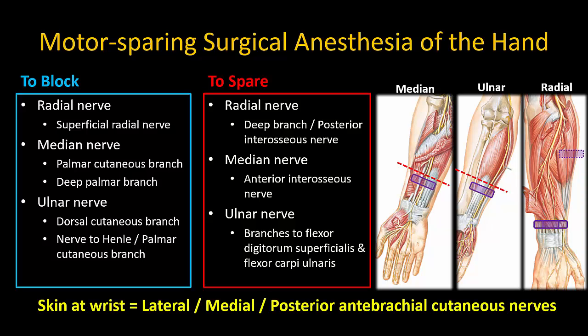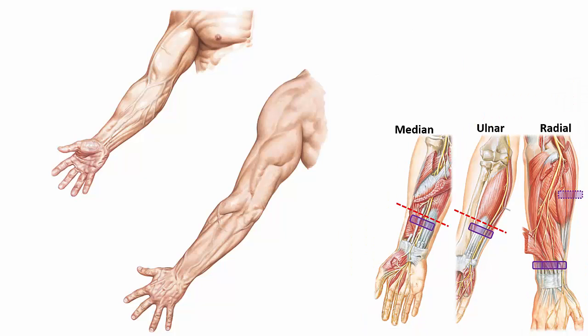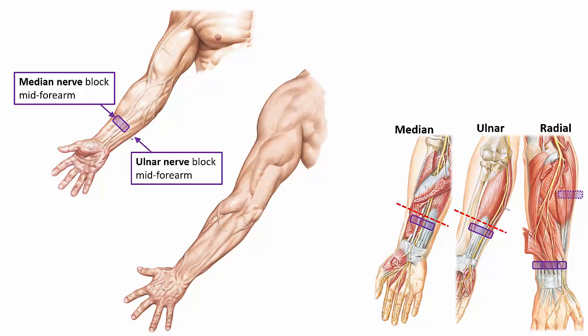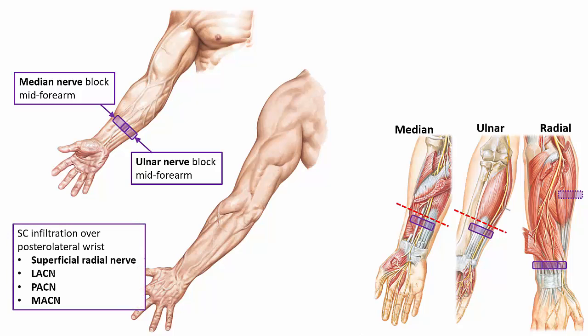Depending on the extent of surgery, it may also be necessary to block the antebrachial cutaneous nerves, which can innervate the skin over the wrist. The recommended blocks are therefore as follows: a mid forearm median nerve block distal to the belly of flexor digitorum superficialis and profundus; a mid forearm ulnar nerve block distal to the belly of flexor digitorum profundus but proximal to the takeoff of the cutaneous branches; and a superficial radial nerve block. This last one can be most efficiently done by subcutaneous infiltration over the posterolateral wrist, which will also cover the antebrachial cutaneous nerves.